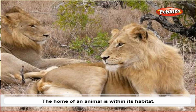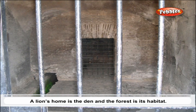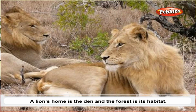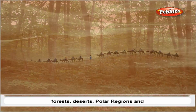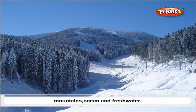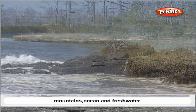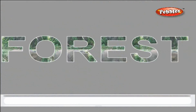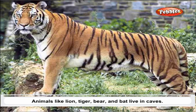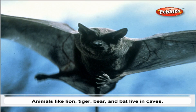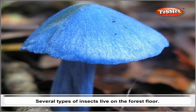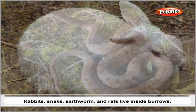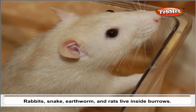The home of an animal is within its habitat. A lion's home is the den, and the forest is its habitat. There are five main habitats on our planet: forests, deserts, polar regions and mountains, ocean, and freshwater. Forest animals like lion, tiger, bear, and bat live in caves. Several types of insects live on the forest floor, and rabbits, snake, earthworm, and rats live inside burrows.